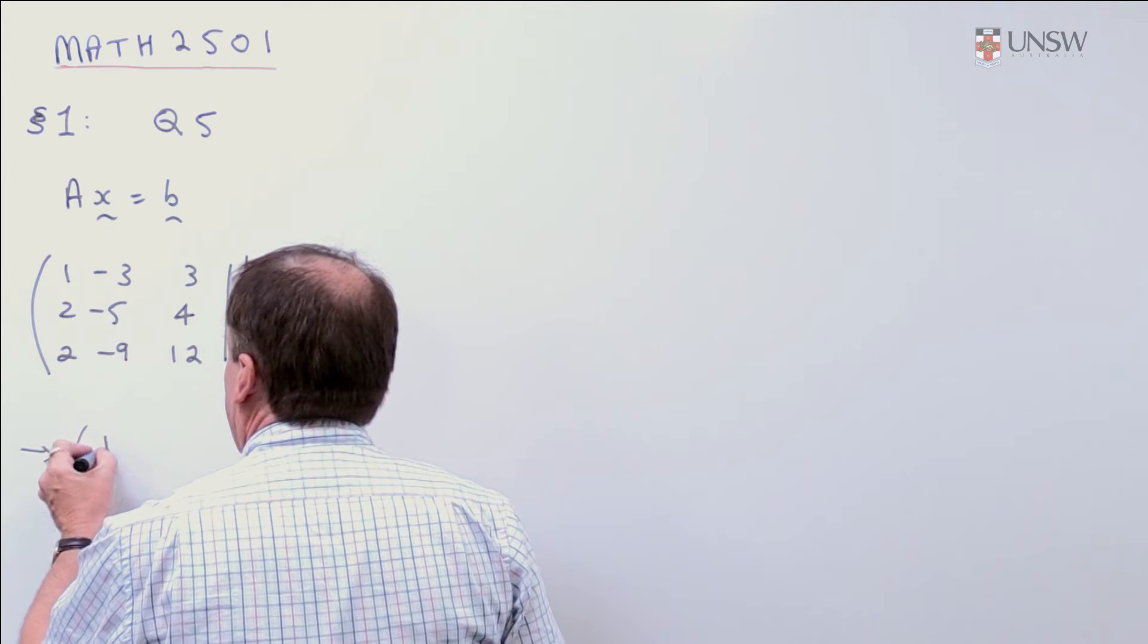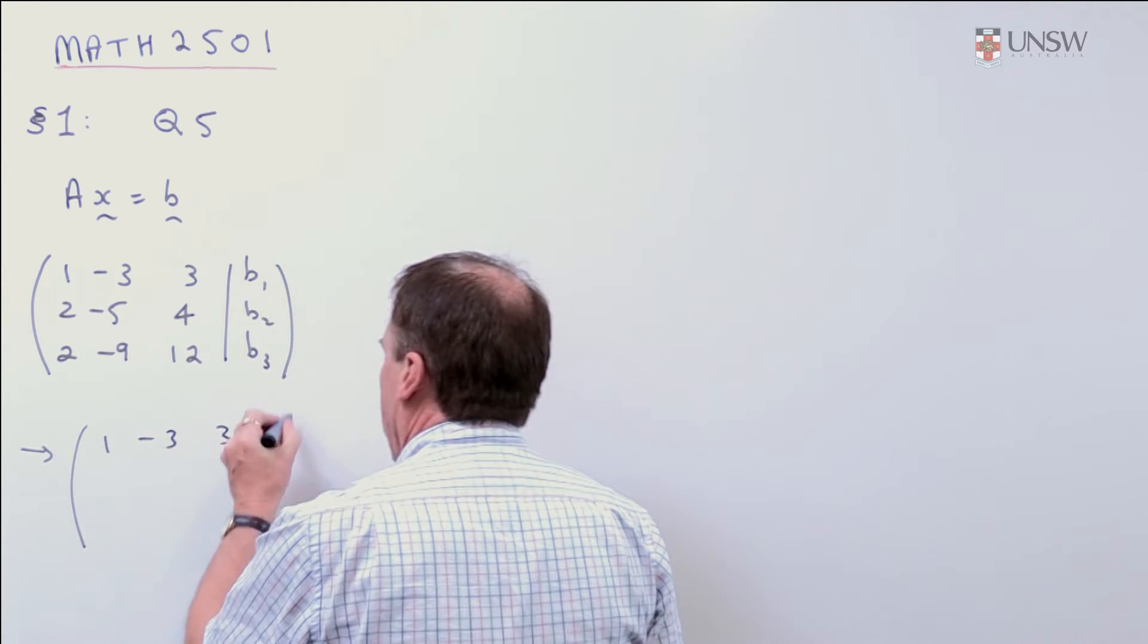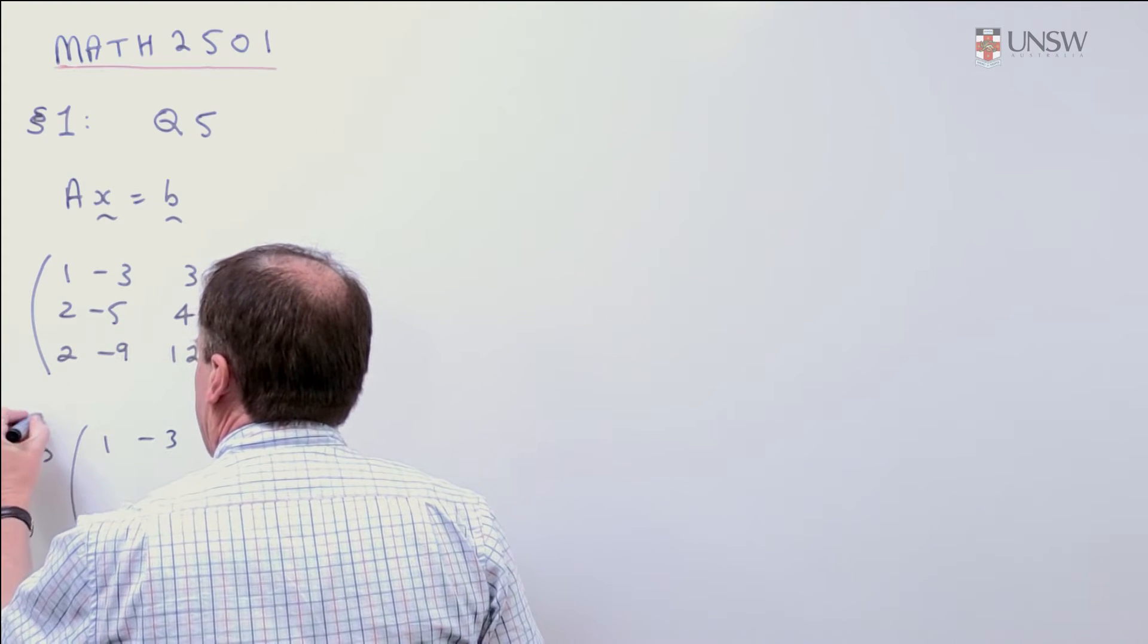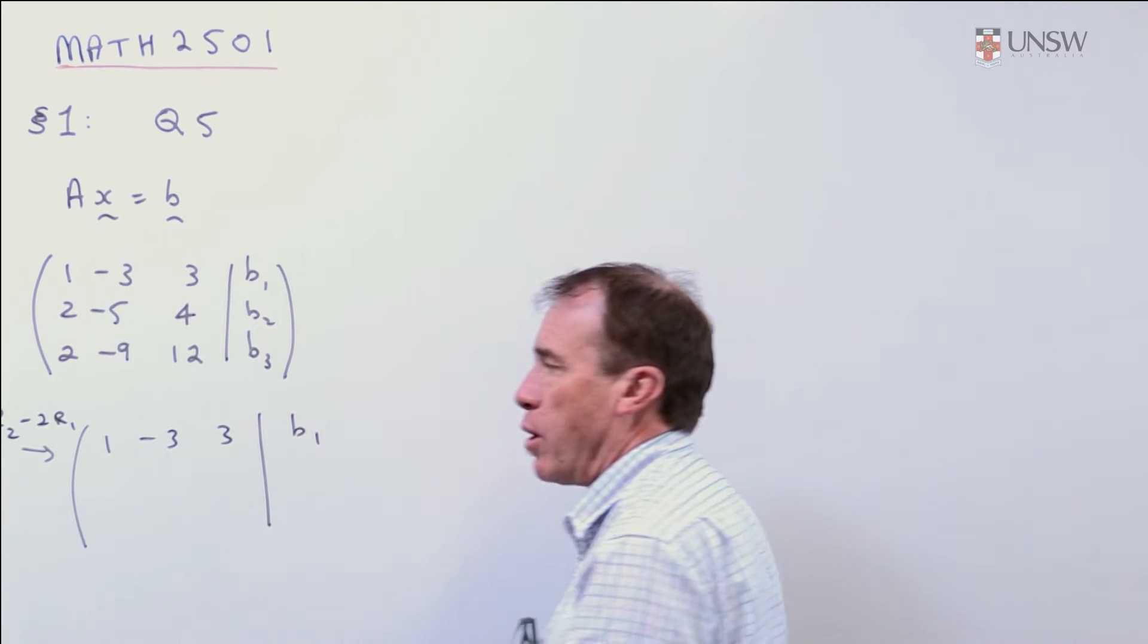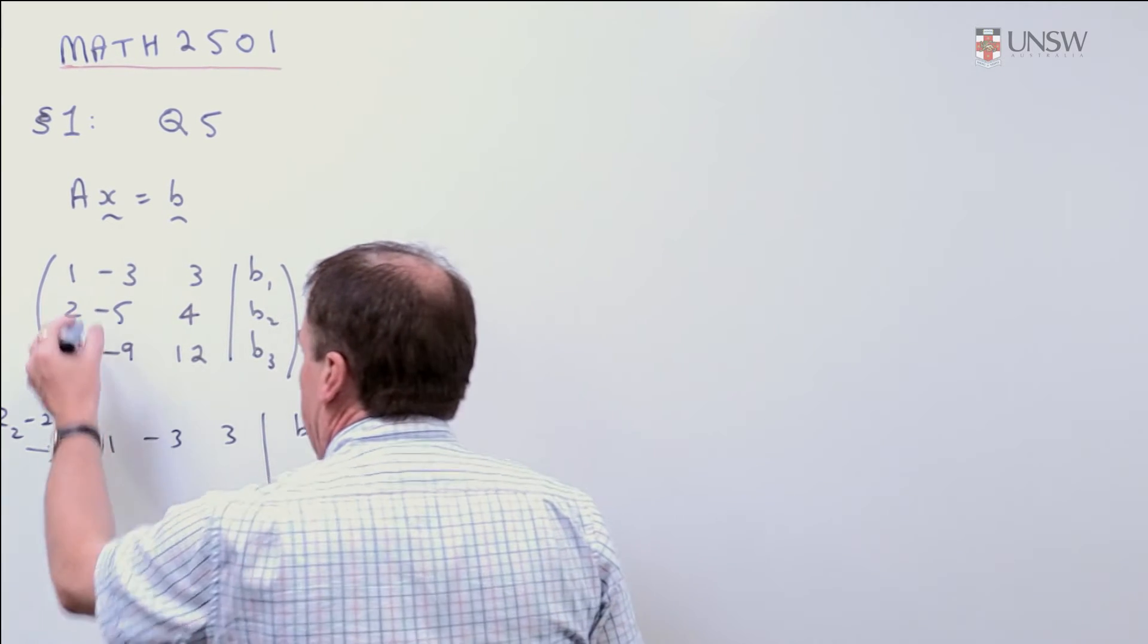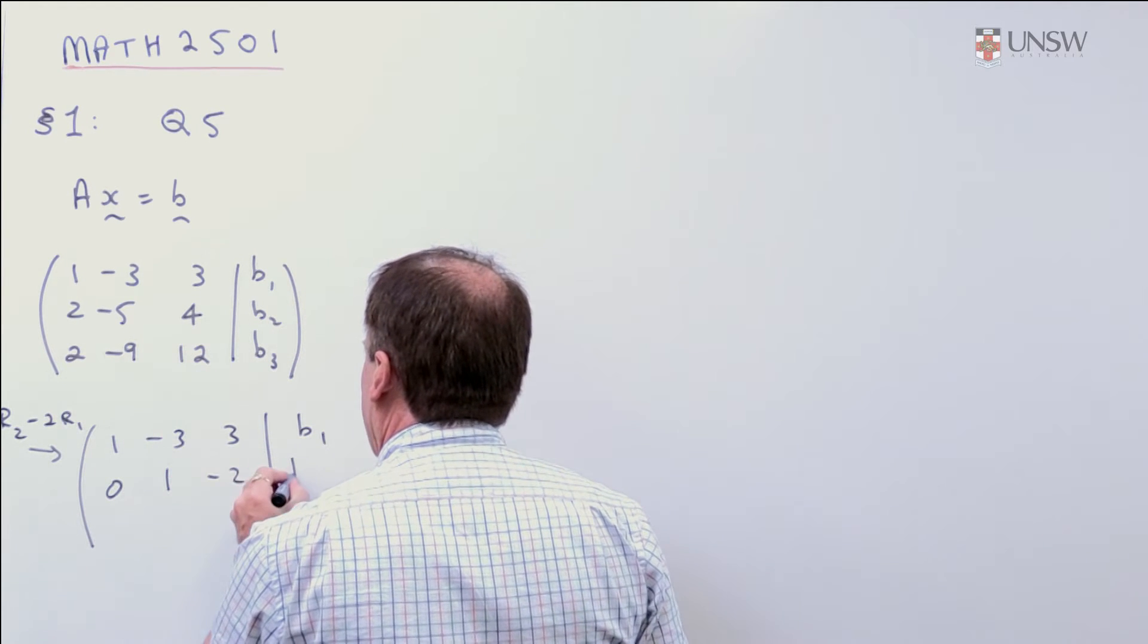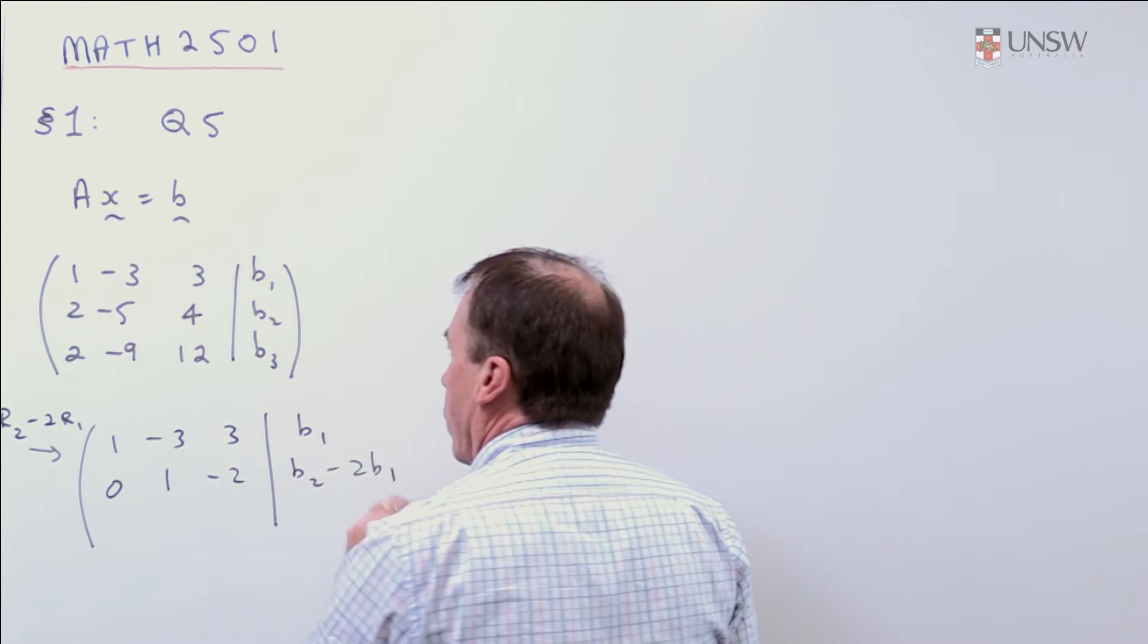So, we're going to take our first row, copy that one down, and I'm going to take, probably a good idea to write down what we're doing. So, I take row 2 minus 2 row 1. So, that minus twice that, that minus twice that, that minus twice that, and then B2 minus 2B1.